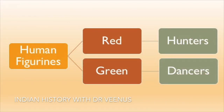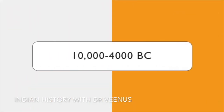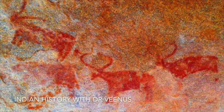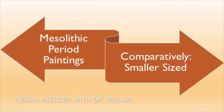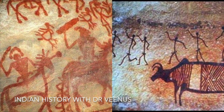The Mesolithic Period (10,000 to 4,000 BC) mainly saw the use of red color. In comparison to the Upper Paleolithic Period, the size of the paintings became smaller. One of the most common scenes depicted is group hunting, and several other paintings depict grazing activity and riding scenes.